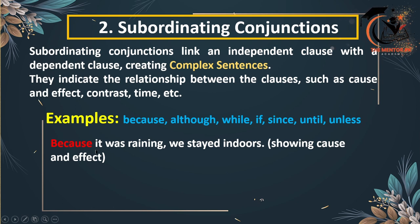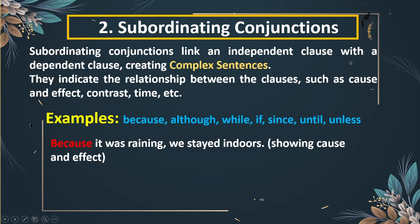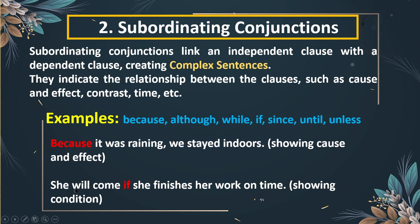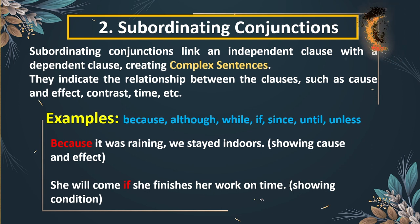The first part, 'because it was raining,' is a dependent clause, and the second part, 'we stayed indoors,' is the independent clause. So subordinating conjunctions combine a dependent clause with an independent clause, creating a complex sentence. The second sentence is: 'She will come if she finishes her work on time.' This is a conditional sentence. The first part is the independent clause and the second part is the dependent clause, depending upon the first clause.